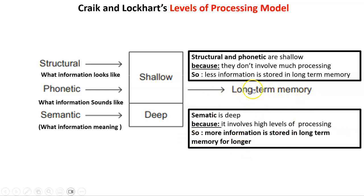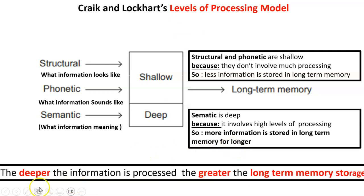To sum up this slide: when you encounter Craig and Lockhart's levels of processing model, you need to think about the levels of processing that allow the most efficient long-term memory storage. The deeper the level of processing, the more processing is involved, and therefore more information can be stored in long-term memory. In an exam question, you need to identify and describe the three levels of processing, then apply why structural and phonetic are shallow, explain the 'because' and the 'so' — linking everything to long-term memory storage — and do the same with semantic.